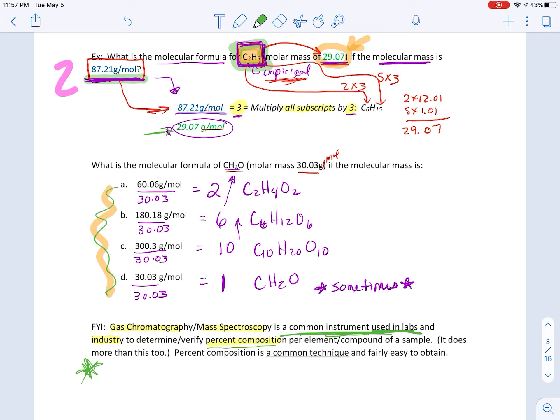Okay, well, you take your 87.21, that's the numerator, and you divide by the mass of just like one unit, the 29.07, and you get three. So you're going to multiply all your subscripts by three. So you're going to get C6H15. You'll notice this is multiplying by three and by three.